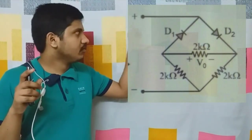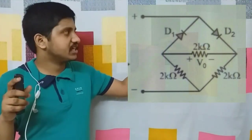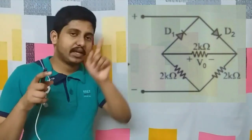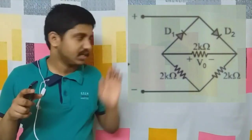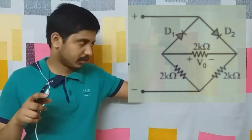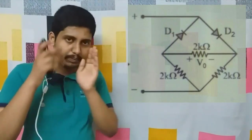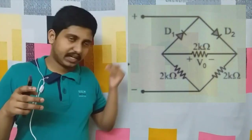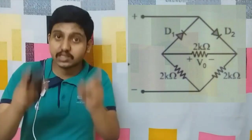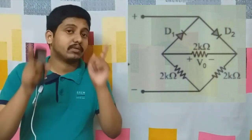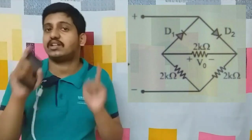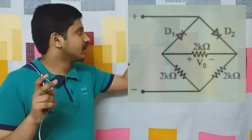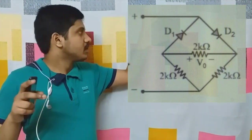When positive potential is attached to the P part and negative to the N part, then it will be forward biased. When the negative part is connected to the positive potential, the P-N junction diode becomes reverse biased. A reverse biased diode will not conduct any electricity.